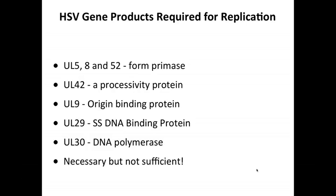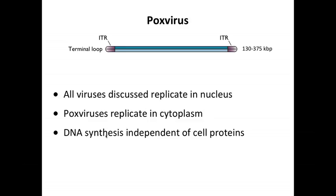Some of the viral gene products needed to replicate herpesviral DNA are shown here. This is a big DNA virus, so it encodes a lot of the replication machinery: three proteins that form the primase, a processivity protein, the DNA polymerase, an origin-binding protein, and a single-stranded DNA binding protein. All these proteins are necessary for viral DNA replication, but they are not sufficient. Something else is needed, and what that is is not known. Even though this virus encodes much of the DNA replication machinery, it still needs something from the cell.